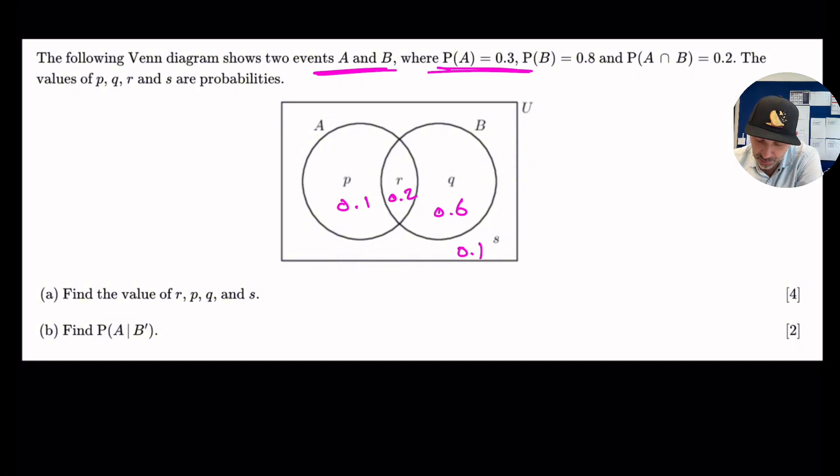Find the values R, P, Q, and S. I think we've done that. Okay. So R is 0.2, P is 0.1, Q is 0.6, and S is 0.1. Okay.